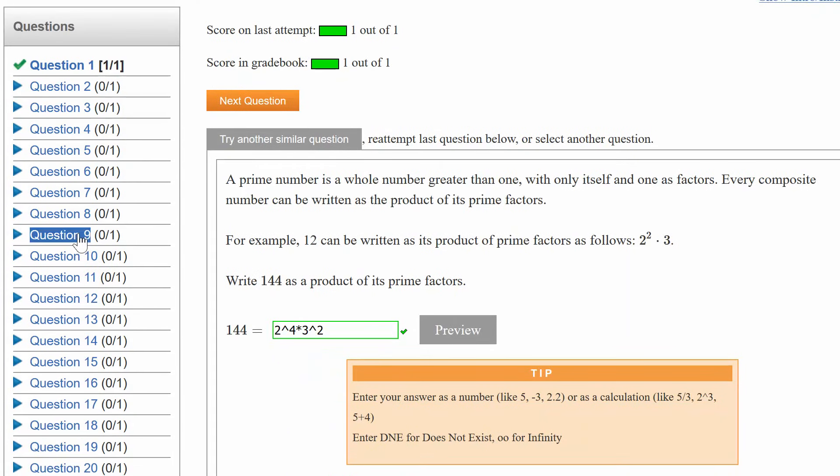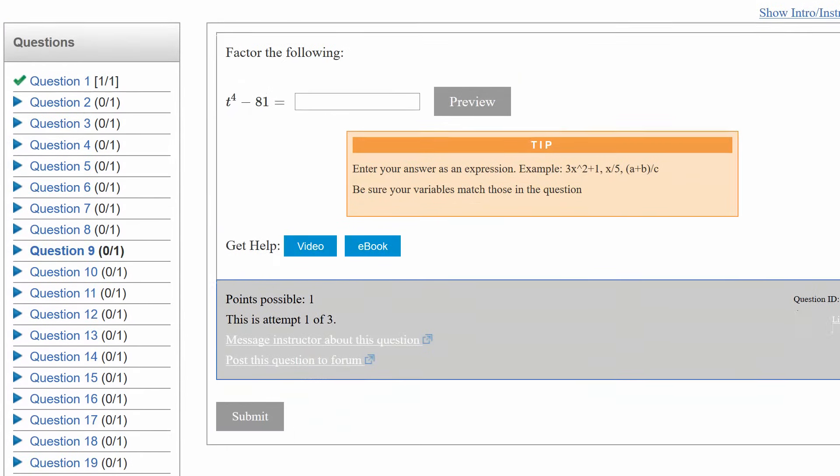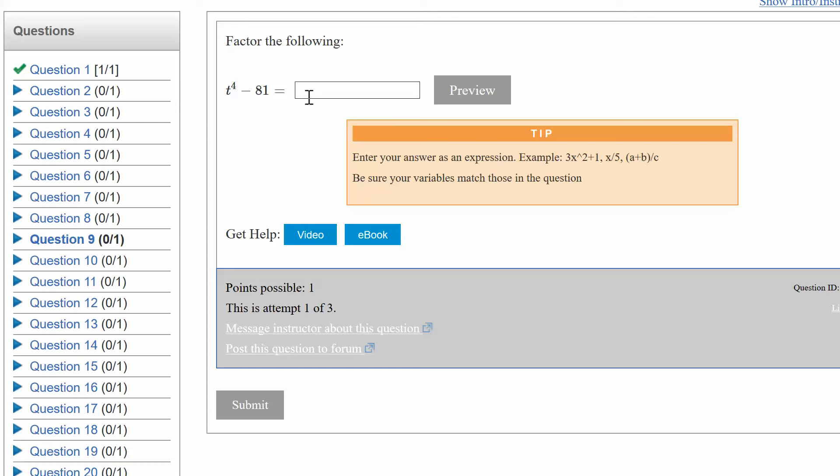Number 1 taken care of. Number 9 is the next one that came in on the form quite a bit here. How do you factor t to the 4th minus 81? Your problem for number 9 could be a little bit different, but it's going to be the same process here. So t to the 4th minus 81. How do I break that down?